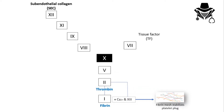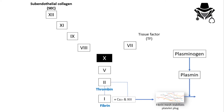Now let's look at what else can affect this cascade. We have plasminogen, which can be converted to plasmin. Plasmin works on the fibrin mesh to degrade it and destroy the formed thrombus. As a product of degradation we get D-dimer, which is used for screening many diseases. Plasminogen is converted to plasmin by the enzyme tPA — tissue plasminogen activator.